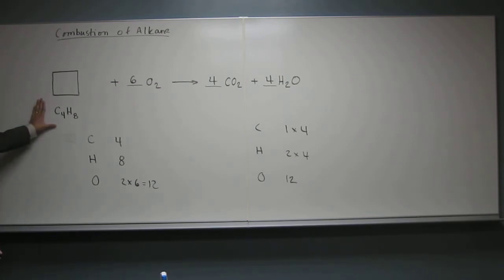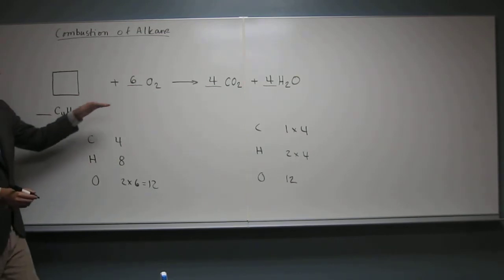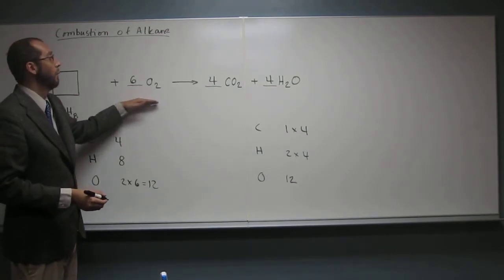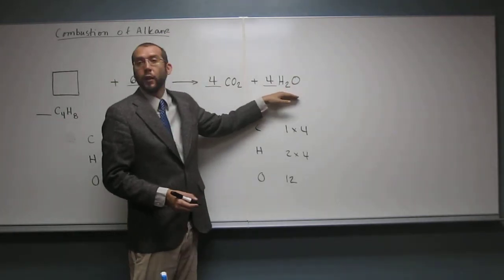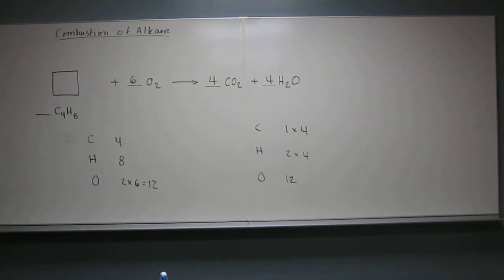So, this is your balanced chemical equation. It's 1 cyclobutane plus 6 oxygen molecules goes to 4 carbon dioxide molecules plus 4 water molecules. Any questions on this one? No questions. Okay, so just make sure you remember how to balance these combustion reactions. I know they're a little difficult, but no problem. Okay.